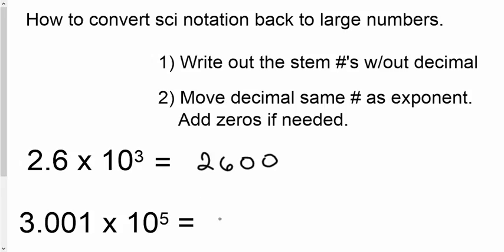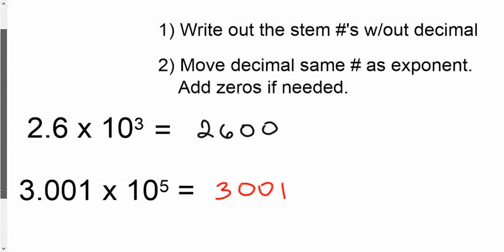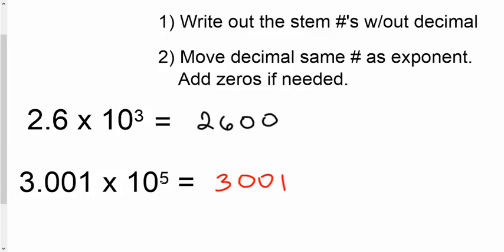Again, write out your stem number without the decimal. And then move the decimal from where it was five spots. In this case, it's a large number. So, we're going to go five to the right. One, two, three, four. So, put a zero there for your fourth. And five. One more zero. So really, this number represents 300,100.